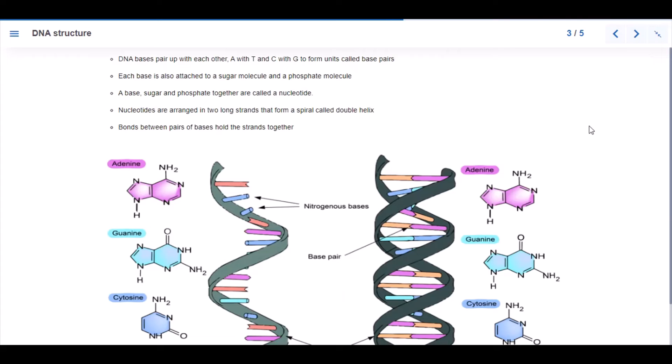DNA structure: DNA bases pair up with each other. A with T and C with G to form units called base pairs. Each base is also attached to a sugar molecule and a phosphate molecule. A base, sugar, and phosphate together are called a nucleotide. Nucleotides are in two long strands that form a spiral called double helix, and bonds between pairs of bases hold strands together.